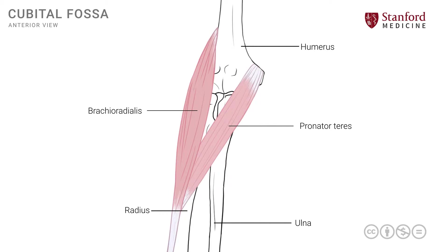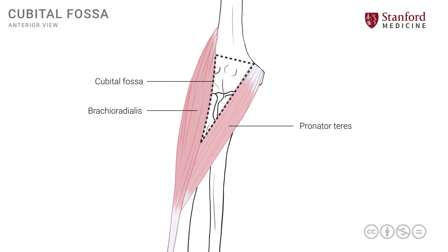These two muscles form the boundaries of this triangular space that we call the cubital fossa. The lateral boundary is formed by the medial border of the brachioradialis muscle. The medial boundary is formed by the lateral border of the pronator teres muscle. The third border of this triangular space is formed by an imaginary line that runs across the epicondylar area of the humerus.